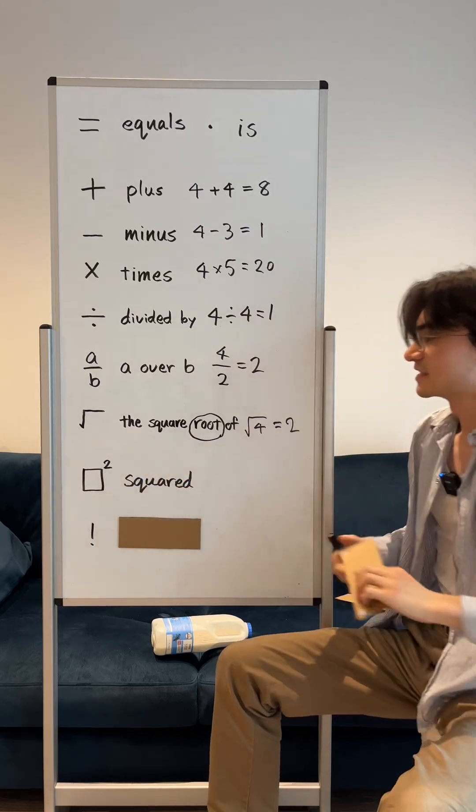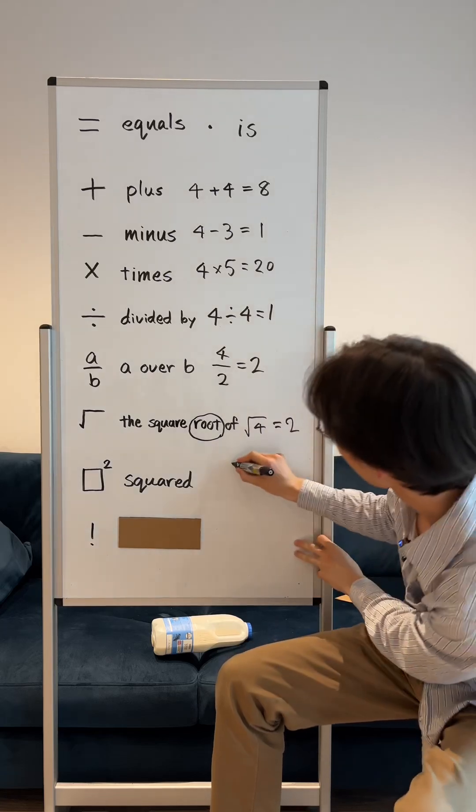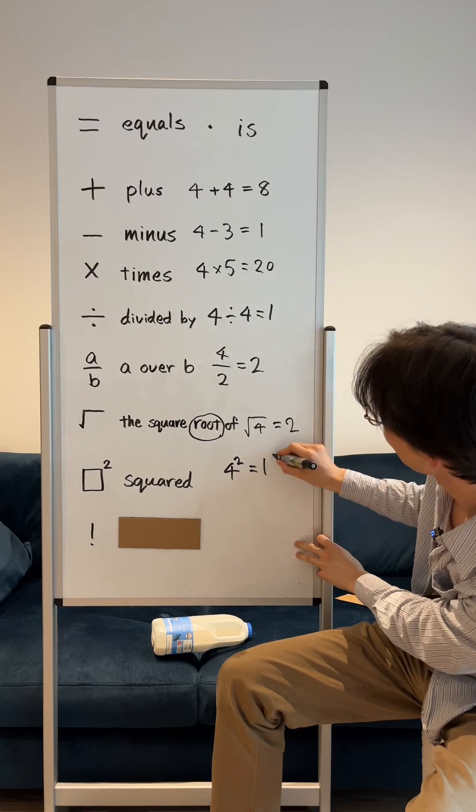This is a number squared. So 4 squared is 16.